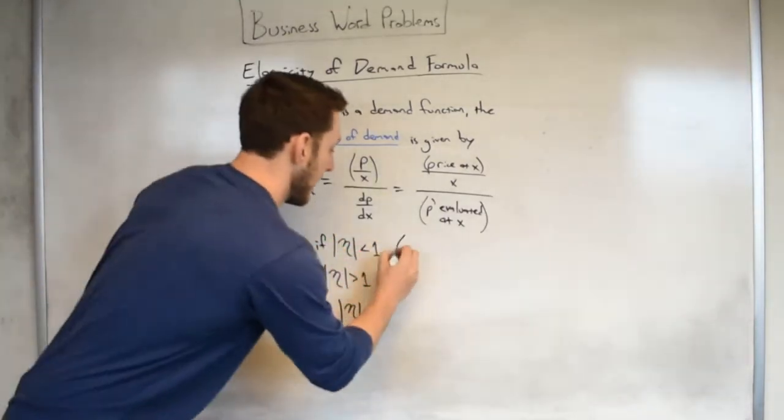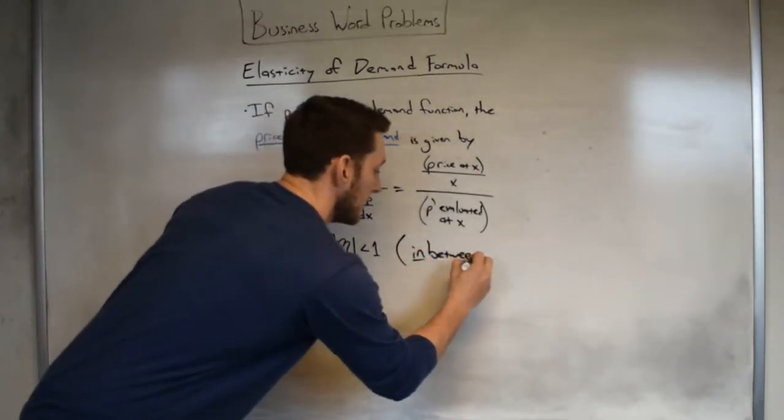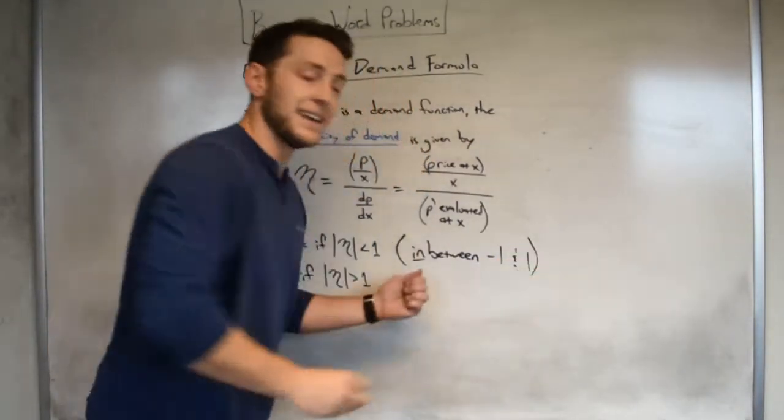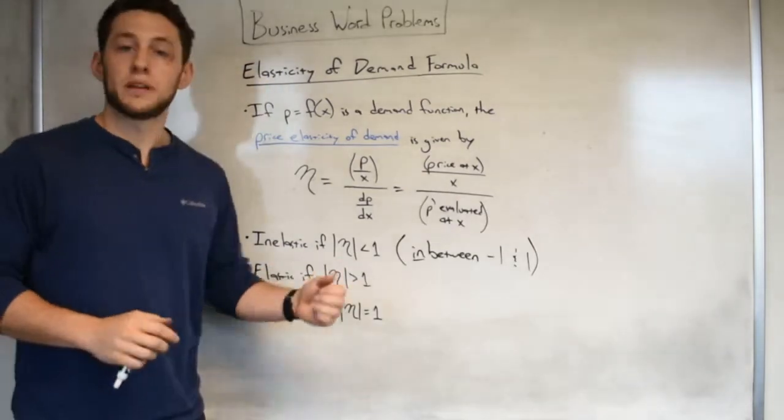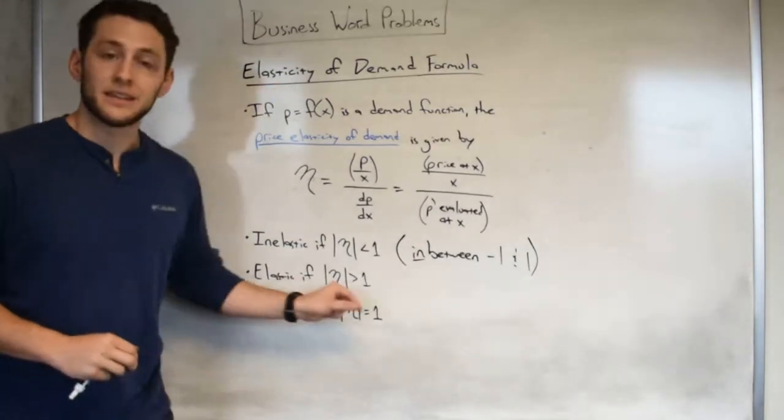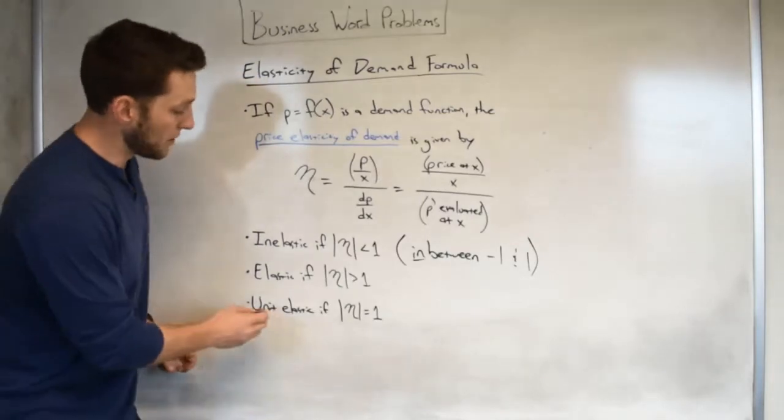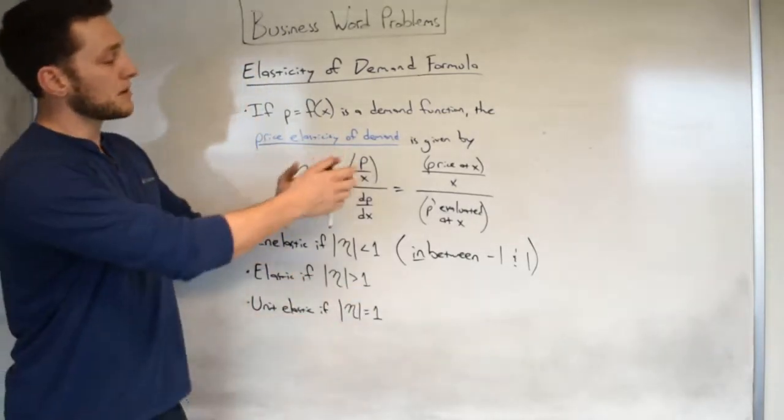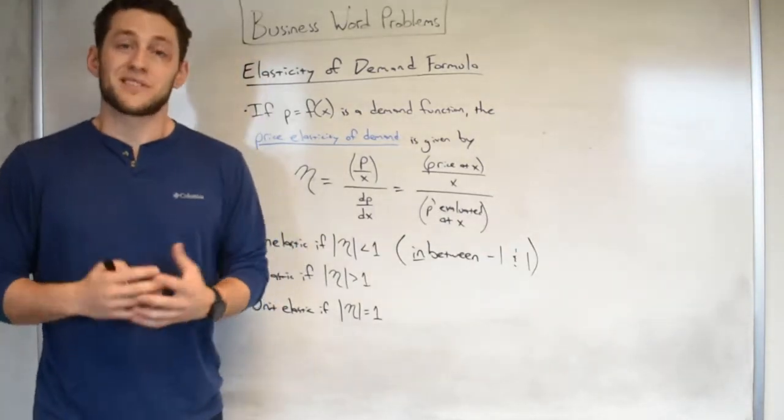Now in practice, when we are actually evaluating that at a given x, what you need to remember is to plug in x for each of these functions. For instance, plug in x for the price function, plug in just regular x, and then ultimately in the bottom, the trickier one, is to remember to plug in x for your derivative as well. Now our market is going to be said to be inelastic if the absolute value of eta is less than 1. You can think about this as in between negative 1 and 1. Inelastic in between. Now elastic will be if eta is greater than 1. And last but not least, unit elastic will be if the absolute value of eta is equal to 1.